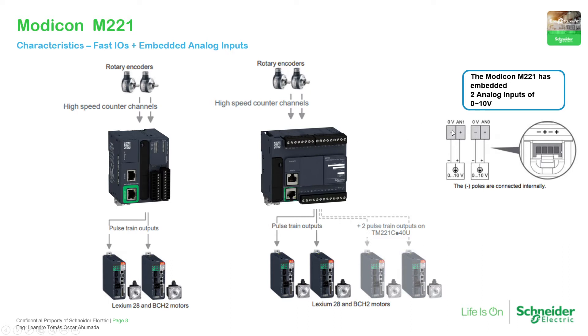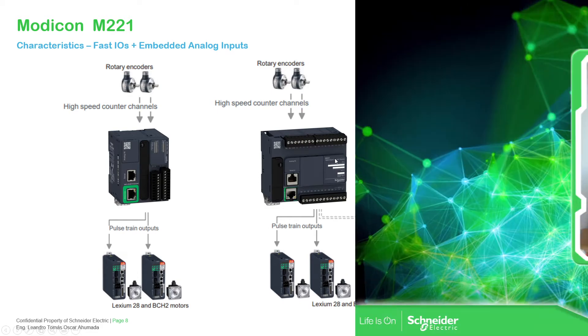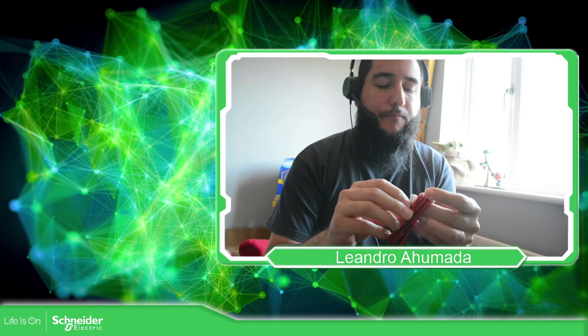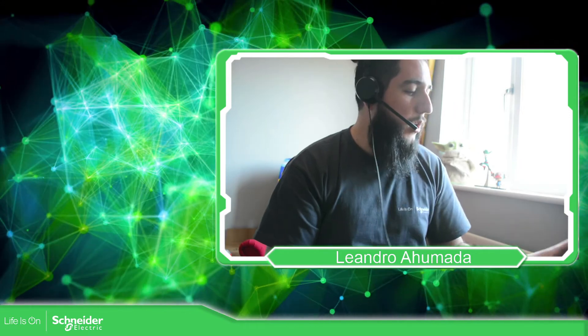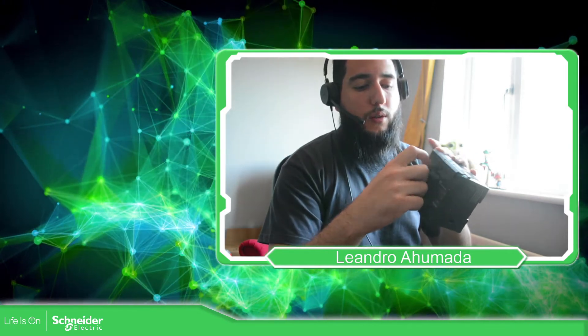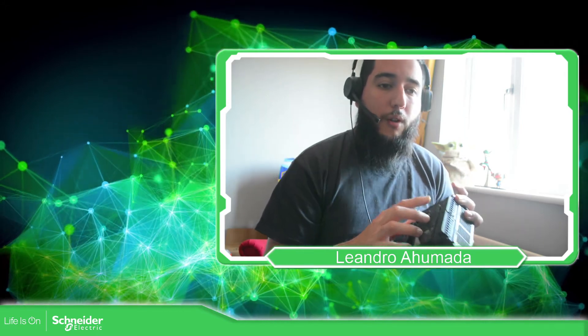Another functionality is the analog inputs. The Modicon M221 has two embedded analog inputs. When you purchase the M221, it comes with a connector cable for the analog inputs. You can remove the analog input cover with a screwdriver and then connect and use the analog inputs of the Modicon M221.